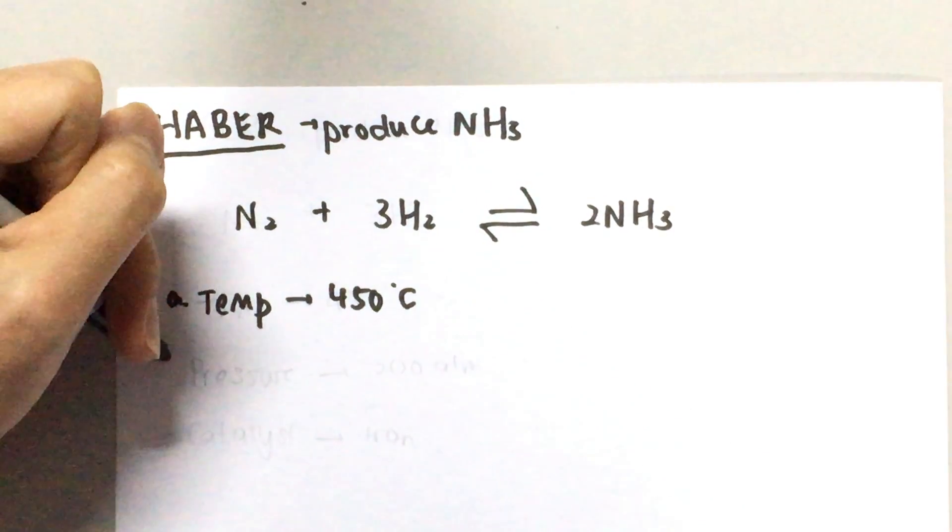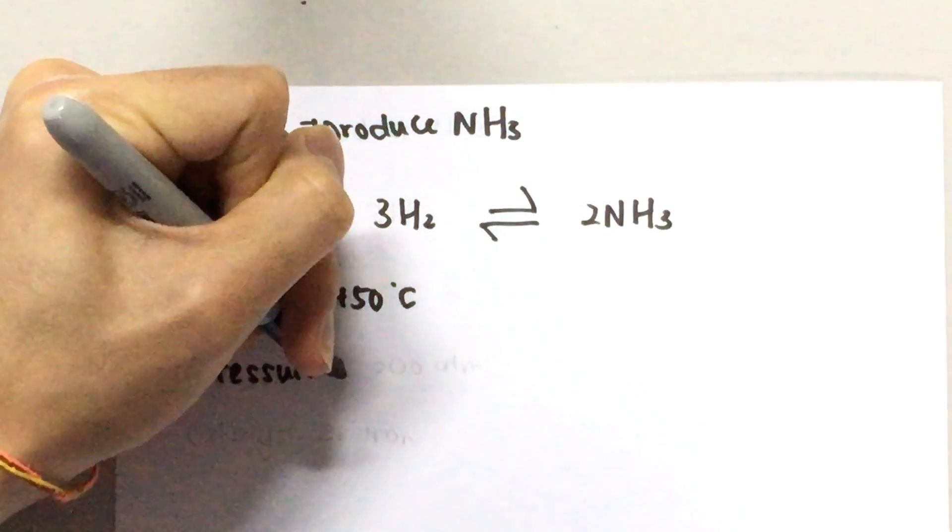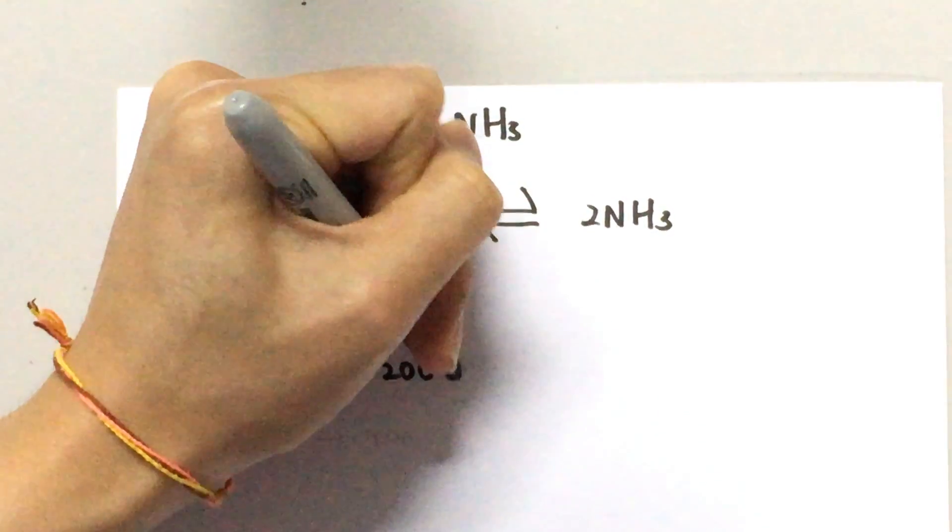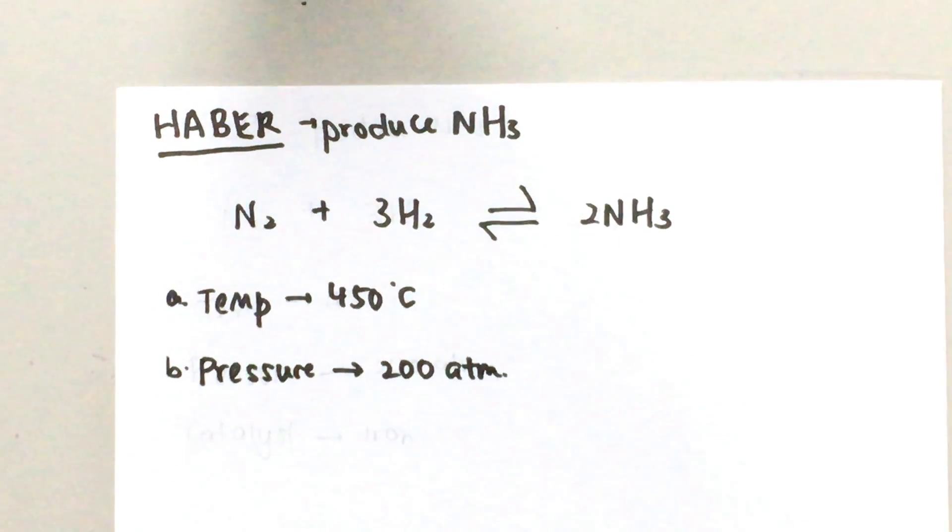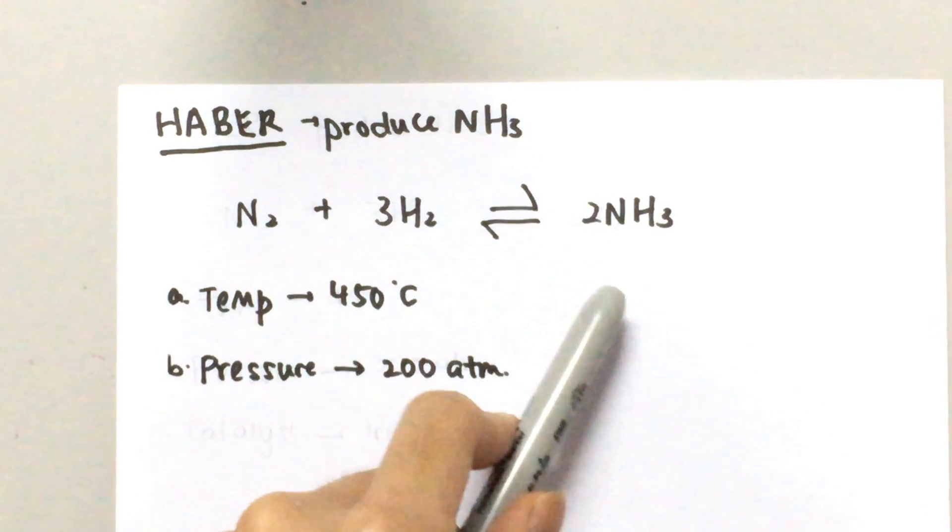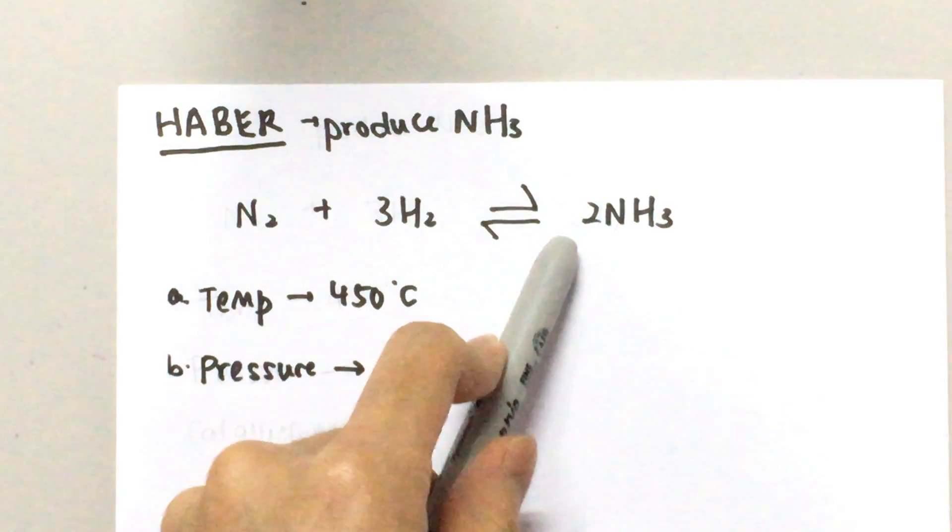Now next we have to look at the pressure. The pressure here is going to be 200 atm which is quite high and the reason behind that is the left side of the equation has more molecules than the right side. I have four molecules here and only two here.